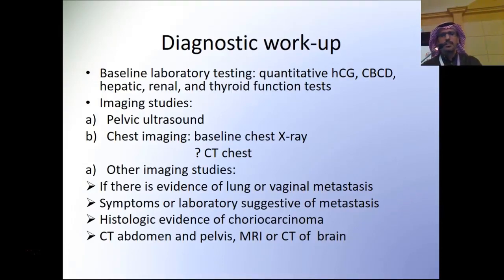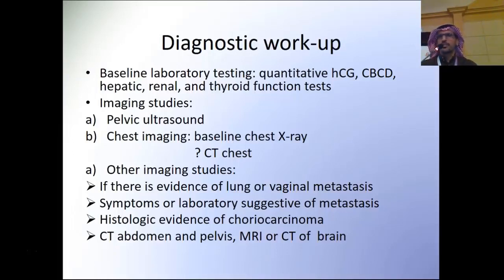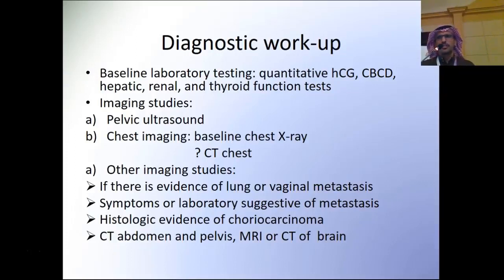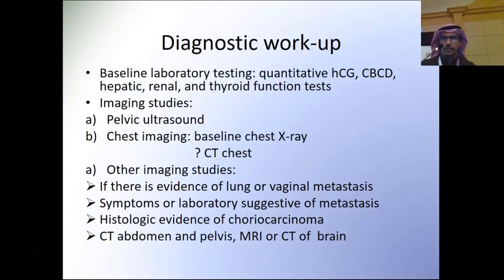Diagnostic workup includes baseline laboratory tests: quantitative beta-HCG, CBC, hepatic, renal, and thyroid function tests due to hyperthyroidism risk. For imaging, pelvic ultrasound is performed to rule out another pregnancy. Baseline chest X-ray is used for FIGO staging and WHO prognostic scoring. CT scan of the chest may detect micro-metastasis in 40% of patients with a normal chest X-ray, but this usually does not change outcome.